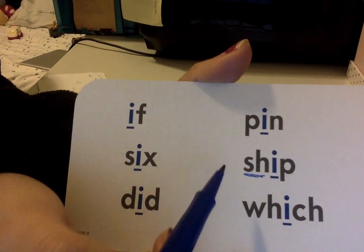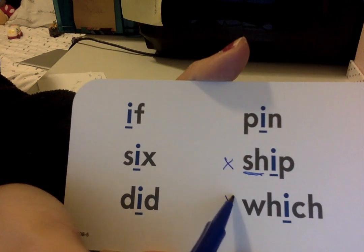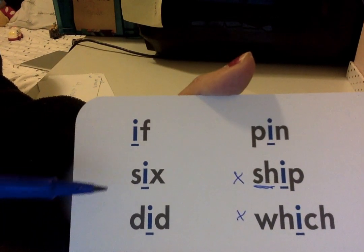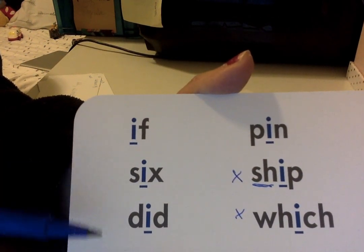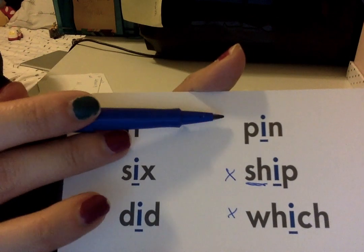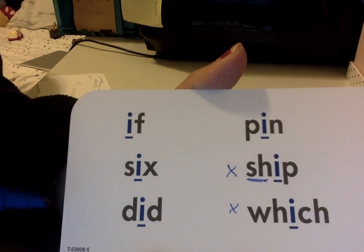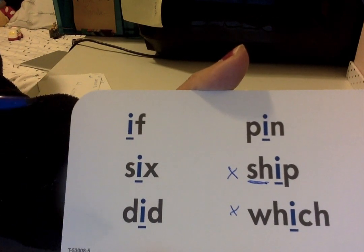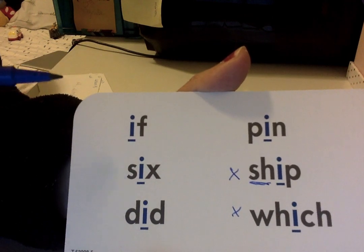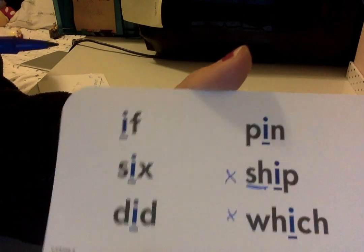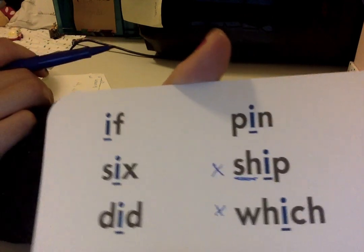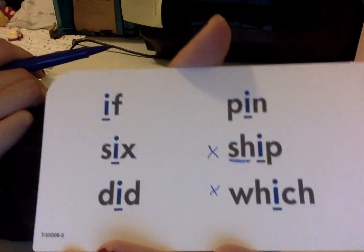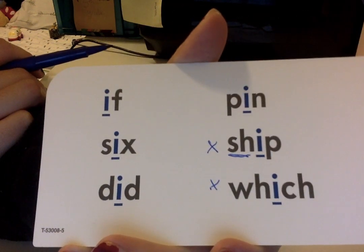We also haven't learned 'which' yet, so don't read those. For your homework, read: if, six, did, pin. Practice reading these words at home with the 'ih' sound. I'm going to take a picture of all the words — make a video and send it to me on my phone or Class Dojo.